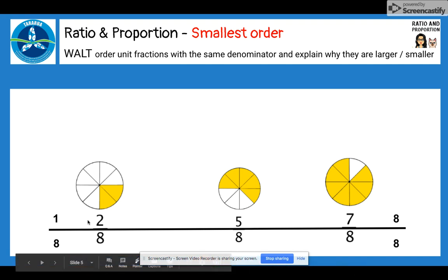So I would place my 2 8ths here and then 5 8ths and then 7 8ths and then 8 8ths there. You should be able to see the numbers, the numerators going up and obviously the denominator all remains the same because it's the same number.